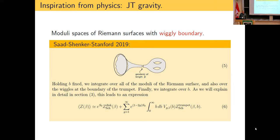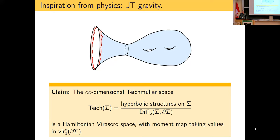Our claim is that there is some infinite-dimensional Teichmüller space in the picture: the space of all hyperbolic structures on sigma, where we don't cut off anything, up to diffeomorphisms which are trivial along the boundary. On this space one still has an action of diffeomorphisms of the boundary — or to be precise, the universal cover of diffeomorphisms of the boundary. We claim this is actually a Hamiltonian Virasoro space, meaning there is a map to the space of Hill operators and a symplectic two-form.